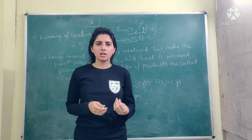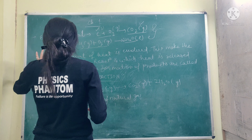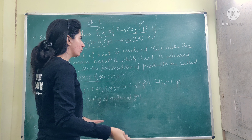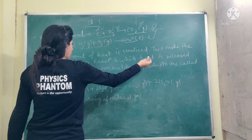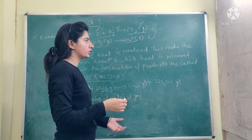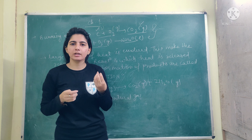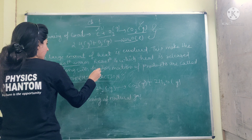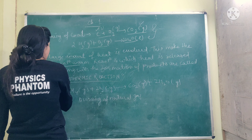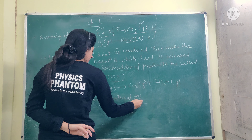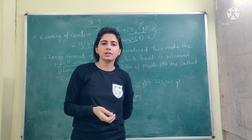What does exothermic mean? Sometimes the amount of heat evolved makes it warm — the temperature rises when heat is released. The reaction in which heat is released along with the formation of a product — we call it an exothermic reaction. Now I have an example of burning of natural gas — when you burn natural gas, it is an example of an exothermic reaction.